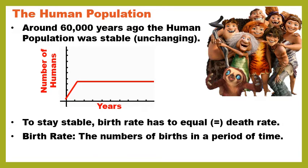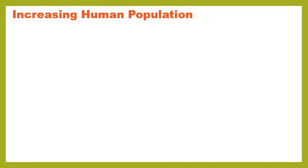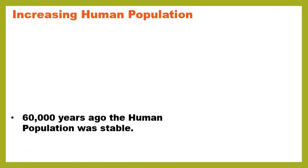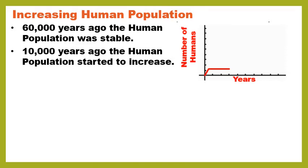Death rate is the number of deaths in a period of time. For a population to be stable, the number of people being born must replace the number of people dying. But 10,000 years ago the human population started to increase. Why was it stable for so long and then started to increase? Humans started to farm and keep animals, so there was more food and they didn't need to hunt as much.